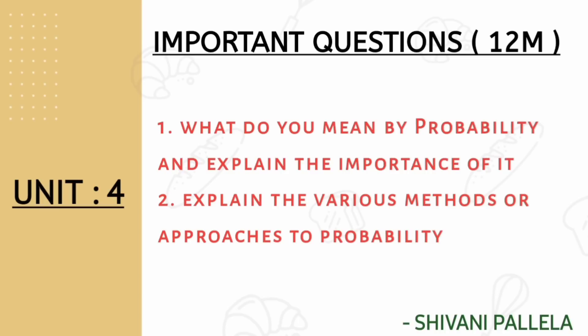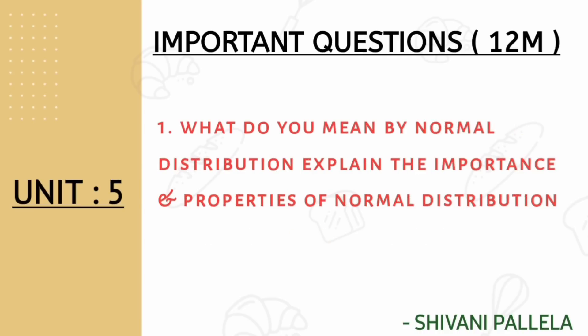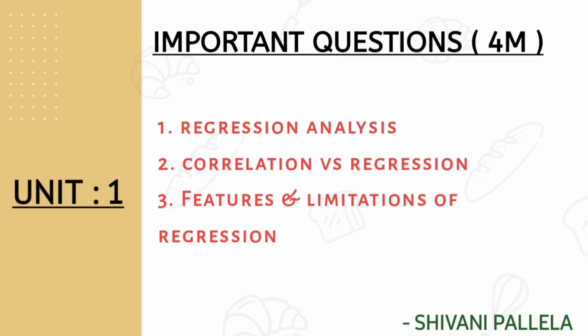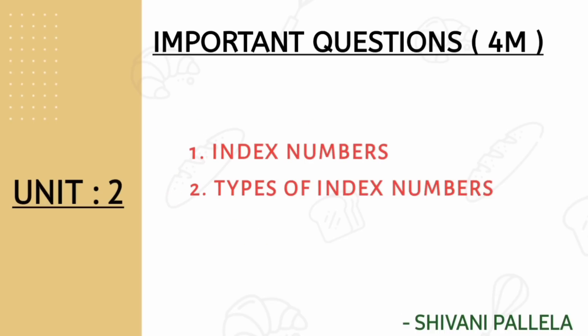In unit number four I have given two questions. If you feel probability is hard, you can go with theory also. When writing theory for 12 marks, you must write three sides of the page — front, back, and front — in your final examination. Unit number five also has one theory question. Give preference to problematic; theory is not compulsory but problematic is definitely compulsory.